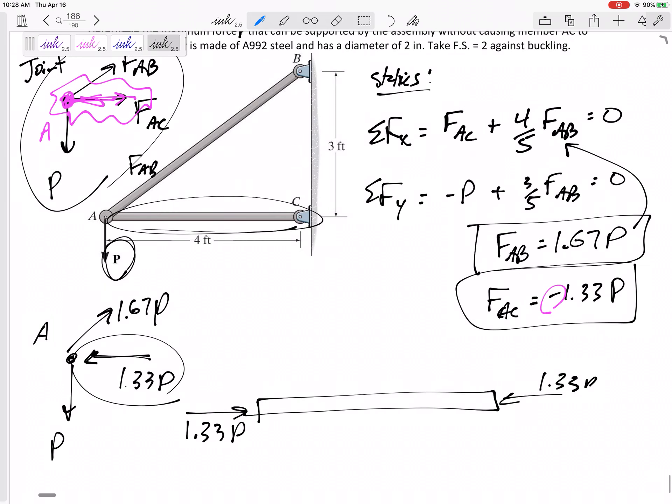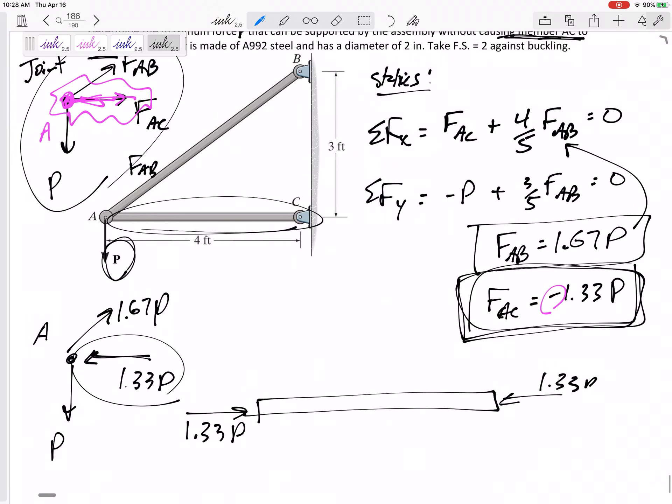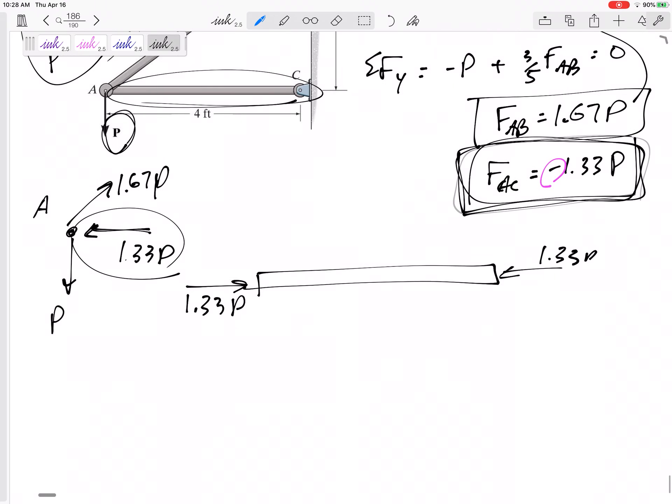I did statics in order to find that the axial force inside bar AC, the bar that I'm worried about making sure AC doesn't buckle, the force inside that is 1.33 P in compression and buckling is compression. So buckling is compression, we're talking about compressive forces right here.